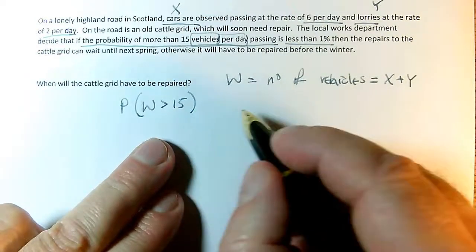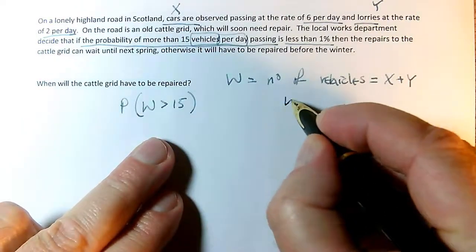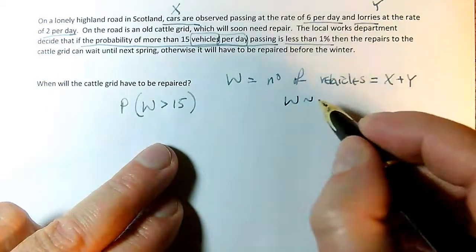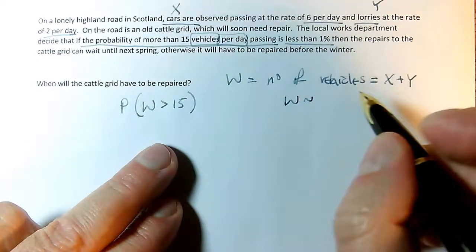I'm getting ahead of myself. Before I can do a probability, I need to say what the distribution of W is. Because Poissons work beautifully, if I add X to Y and they're both Poisson, which I have to assume they are - it doesn't say anything about independence, so there are some assumptions involved. That's not mentioned in the question, so I'll assume X and Y are Poisson. Adding X to Y gives me another Poisson for W, and its mean will be the mean for X plus the mean for Y. The mean for X is 6 for cars, and the mean for Y is 2 for lorries. So it's a Poisson with mean 8, lambda equals 8.